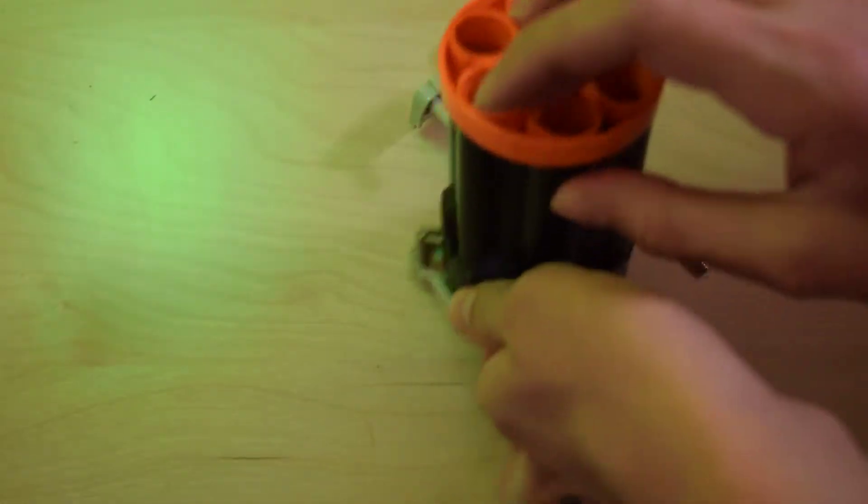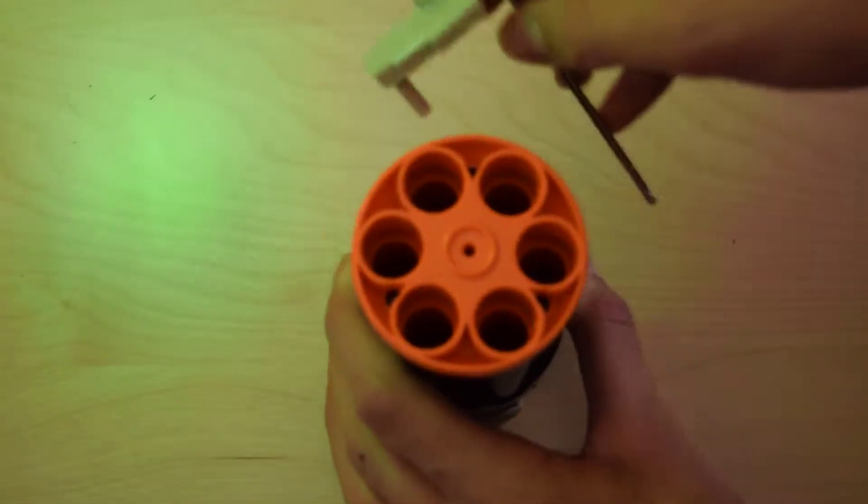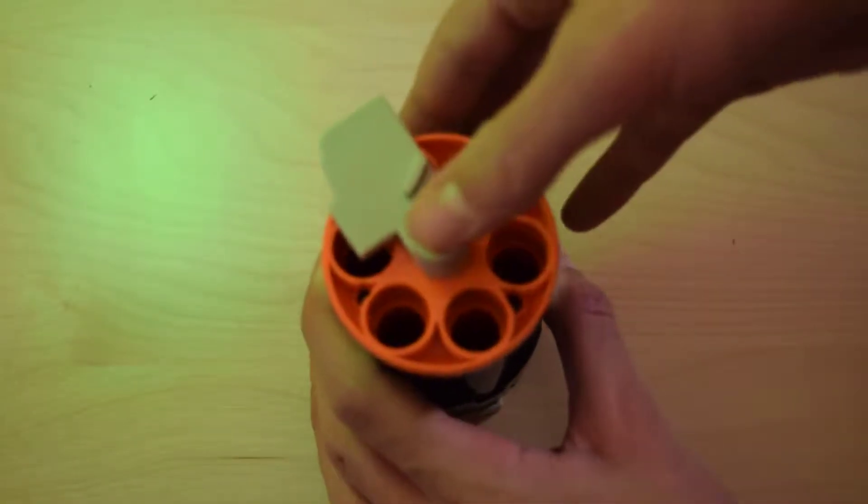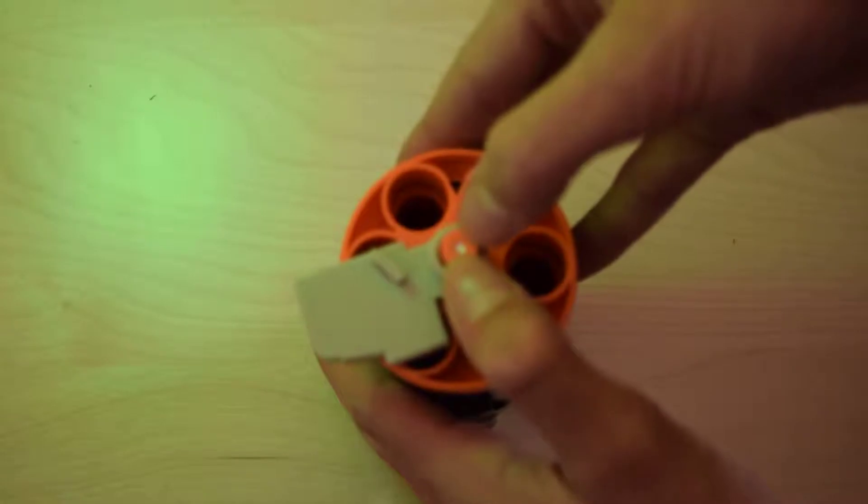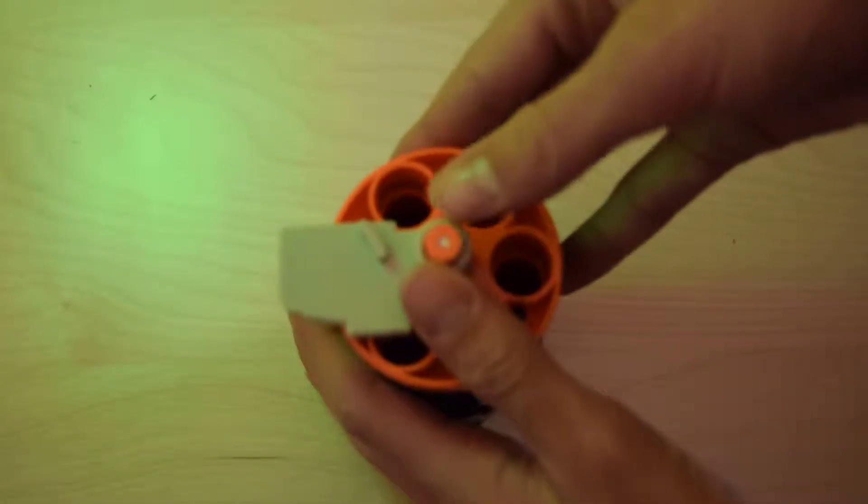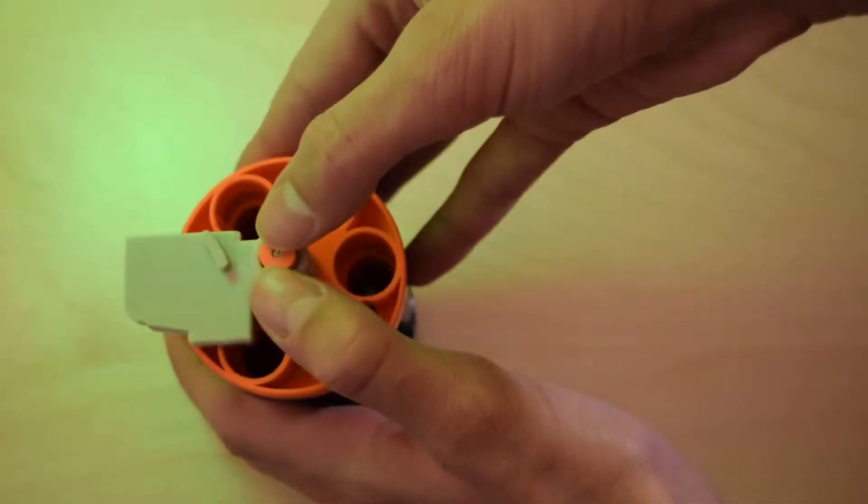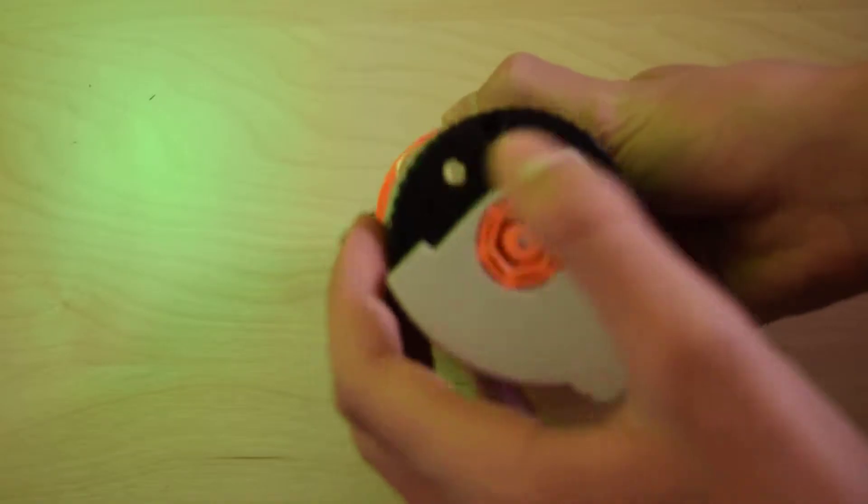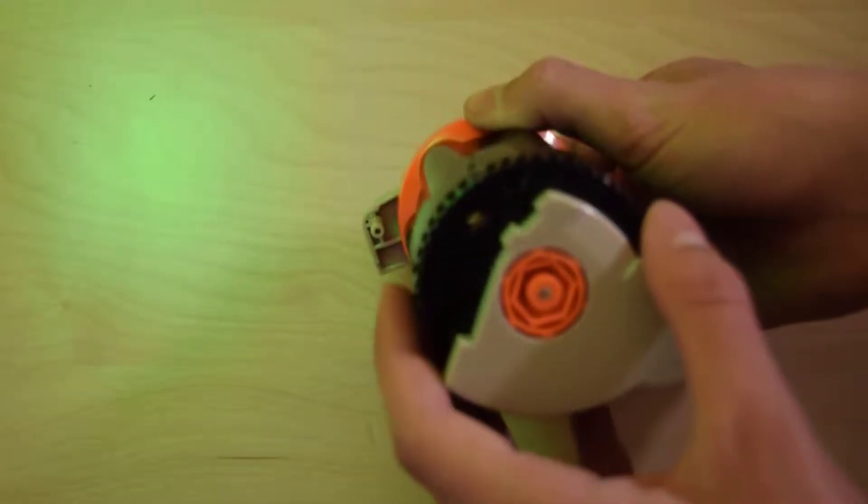Then flip the cylinder over and take this upper plastic piece and push it back down. Now again, for some blasters this may be hard and you'll need a hammer, but for mine you can just push it down. Now you just need to replace the screws on the bottom and the cylinder is back together.